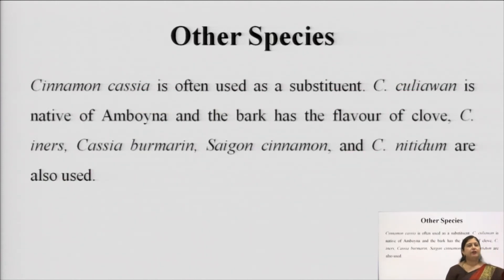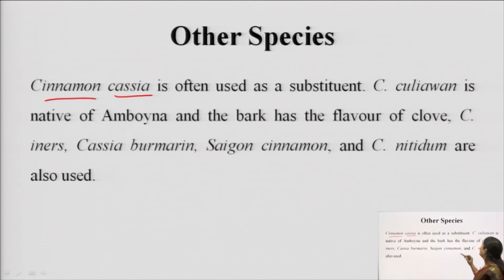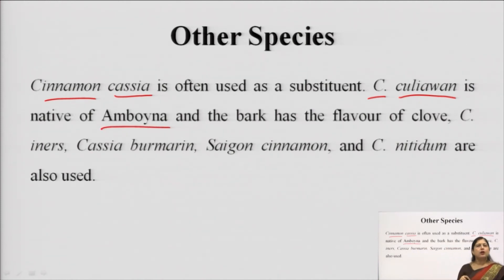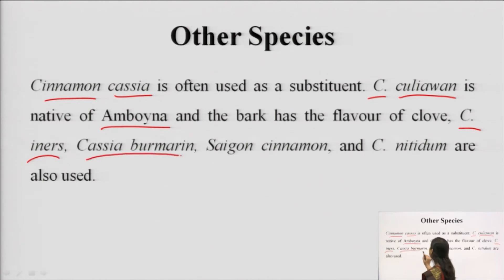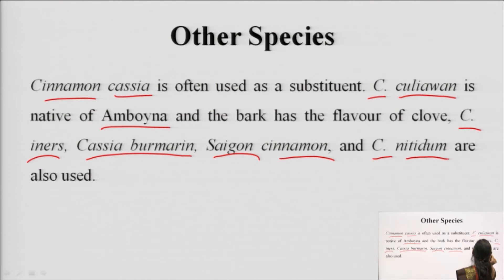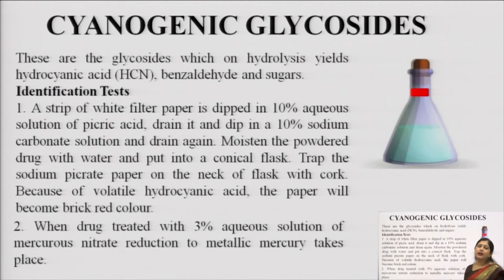Now we move to other species that can be used as substituents — not adulterants — for cinnamon. These include Cinnamomum cassia, also known as Chinese cinnamon; Cinnamomum culilawan found in Amboyna, an island in Indonesia; Cinnamomum iners; Cassia burmanni; Saigon cinnamon; and Cinnamomum nitidum. With this we finish the volatile oil drugs and move to the next drug, which belongs to the cyanogenic glycosides.